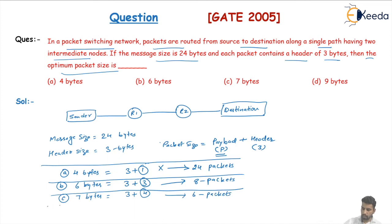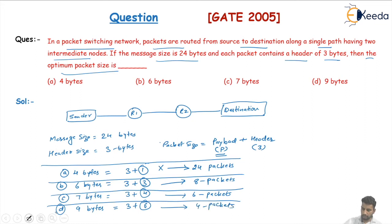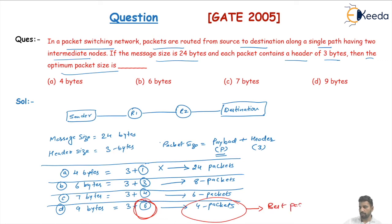Option D gives nine bytes: three bytes is the header size and six bytes is the payload size. This way we need to transmit only four packets. In case D we transmit only four packets and the payload size is also high compared to the other three cases, so this is the best case with less overhead and high payload size.